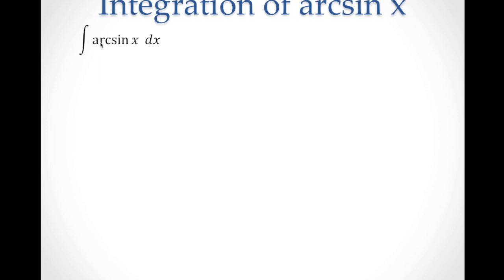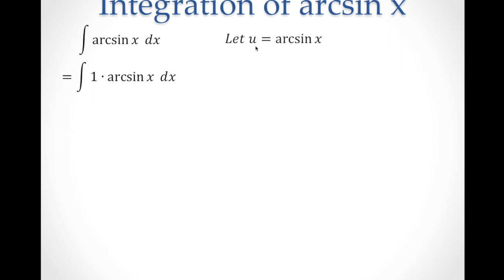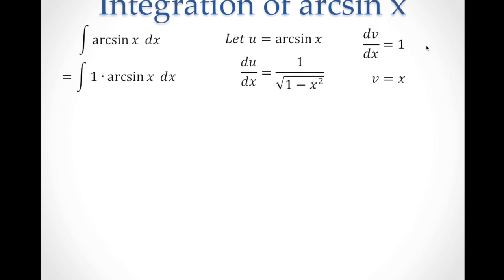Let's start with the integration of arc sine x with respect to x. Notice that there is just one factor here, but you can express this as the integral of 1 times arc sine x dx. It makes more sense to let u be equal to arc sine x, so we let u = arc sine x, and then the derivative is du/dx = 1 over square root of 1 minus x squared. Our dv/dx will be 1, and integrating that gives v = x.